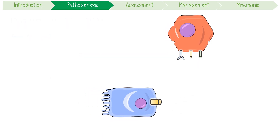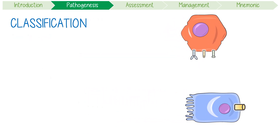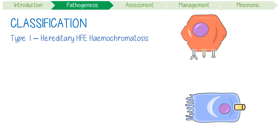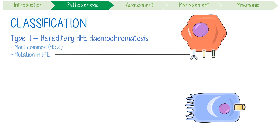Congenital hemochromatosis is classified into four main types, each resulting in iron dysregulation at different points of this process. Type 1, also known as hereditary HFE hemochromatosis, is the main focus of this video. It's the most common type, accounting for 95% of cases, and is due to a mutation in the HFE gene. This means hepatocytes lose the ability to appropriately increase hepcidin levels and provide normal negative feedback, resulting in iron overload.